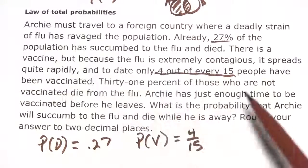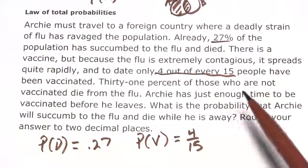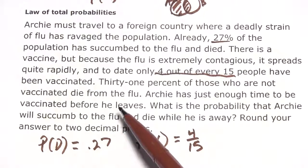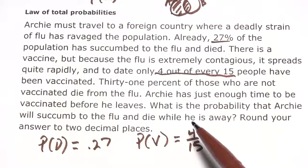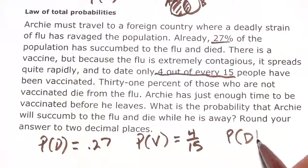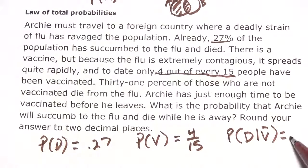Then it says 31% of those who are not vaccinated die from the flu. That's a conditional. Given that you're not vaccinated, you have a 31% chance of dying. So the probability of death given not having been vaccinated is P(D|NV) = 0.31.